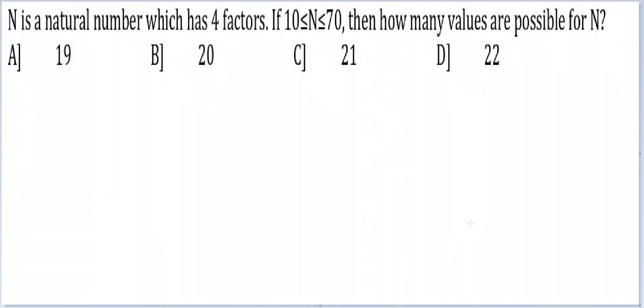Let's look at this question. N is a natural number which has 4 factors. If 10 lies in the range 10 to 70, how many values are possible for N?